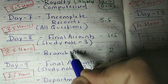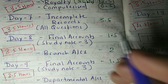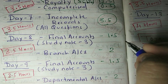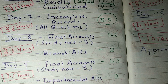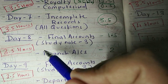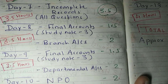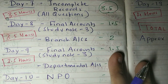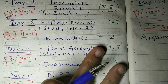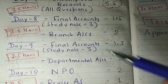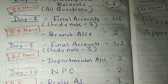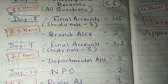Day 6 (covering Joint Venture and Royalty) will take 3.5 hours in total, and you have to complete both chapters that same day. On Day 8, you have to learn Final Accounts. However, I have divided Final Accounts into 2 days — Day 8 and Day 9 — because it is a slightly confusing and heavy chapter, so we will not study it all in one day.